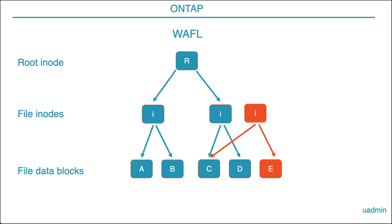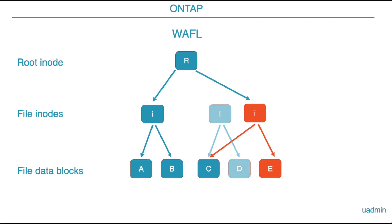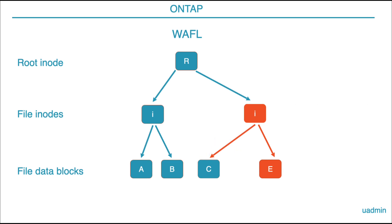The same goes for the layer above, and so on. Finally, when we get to the root inode, this is the only block in the entire file system that will actually be overwritten. The reason why this is a very nice technique is that right before the overwrite of the root inode, if the system would crash, then the old path to the data is still valid — so if the system is back up, the procedure can repeat itself. When the root inode is finally overwritten, the blocks that are no longer in use can simply be freed. In official terms, this is when the consistency point is complete, because we now have a complete new view of the file system.